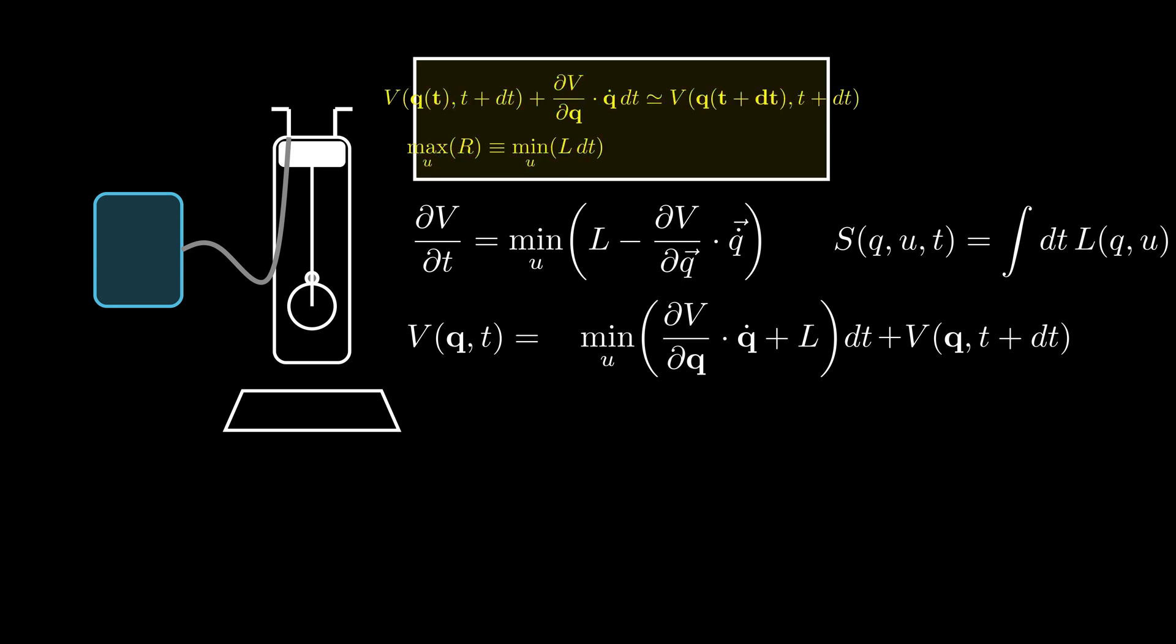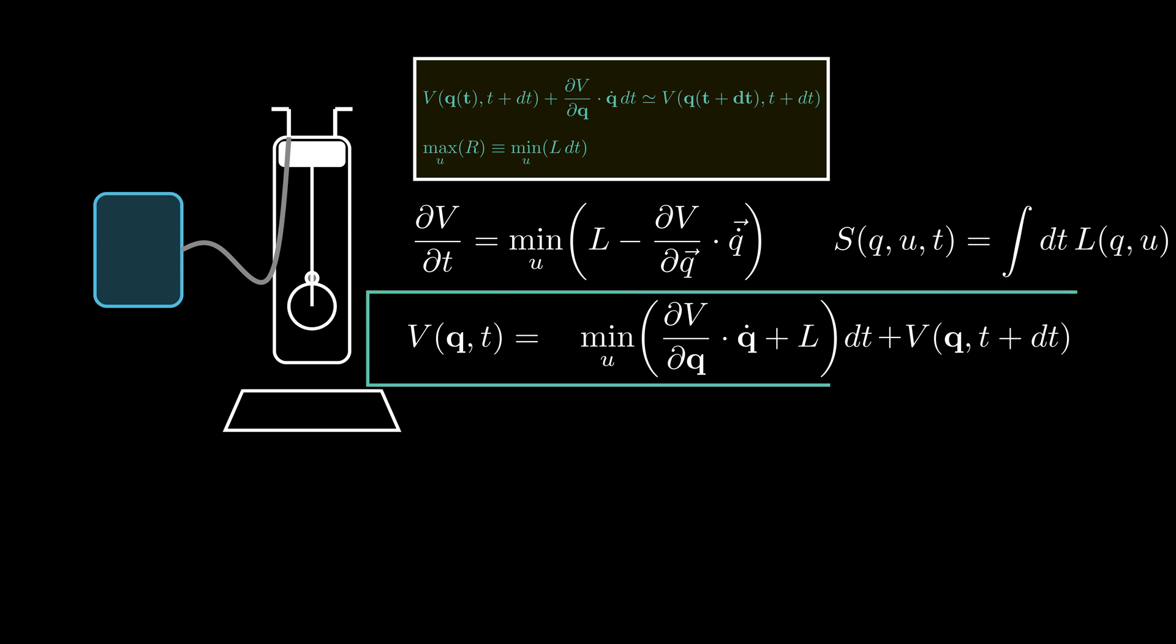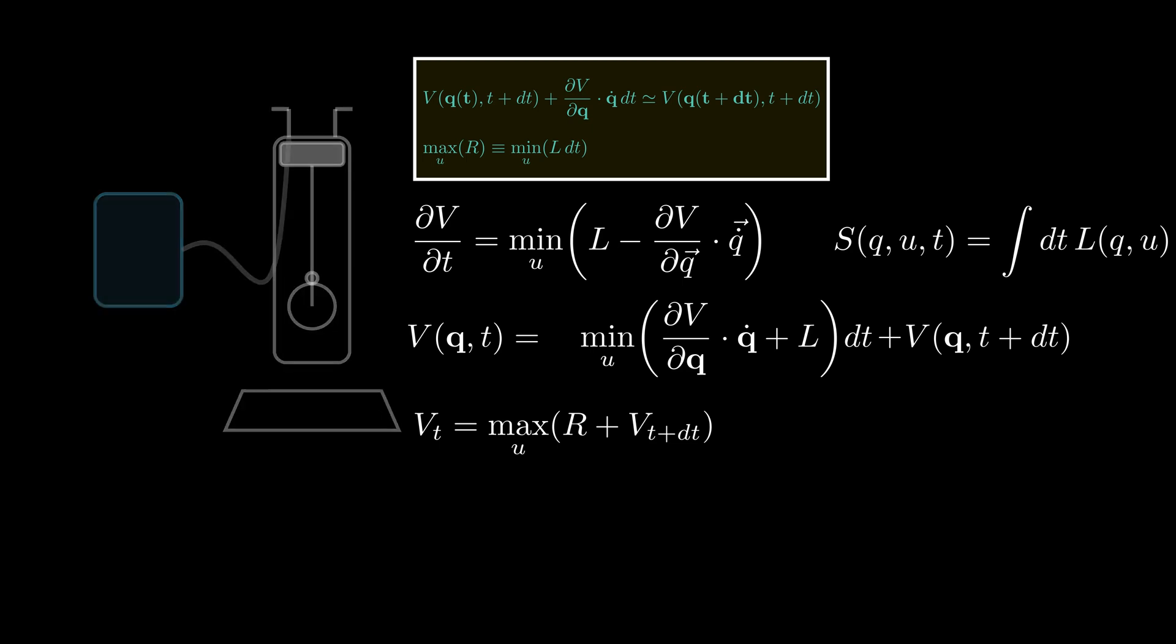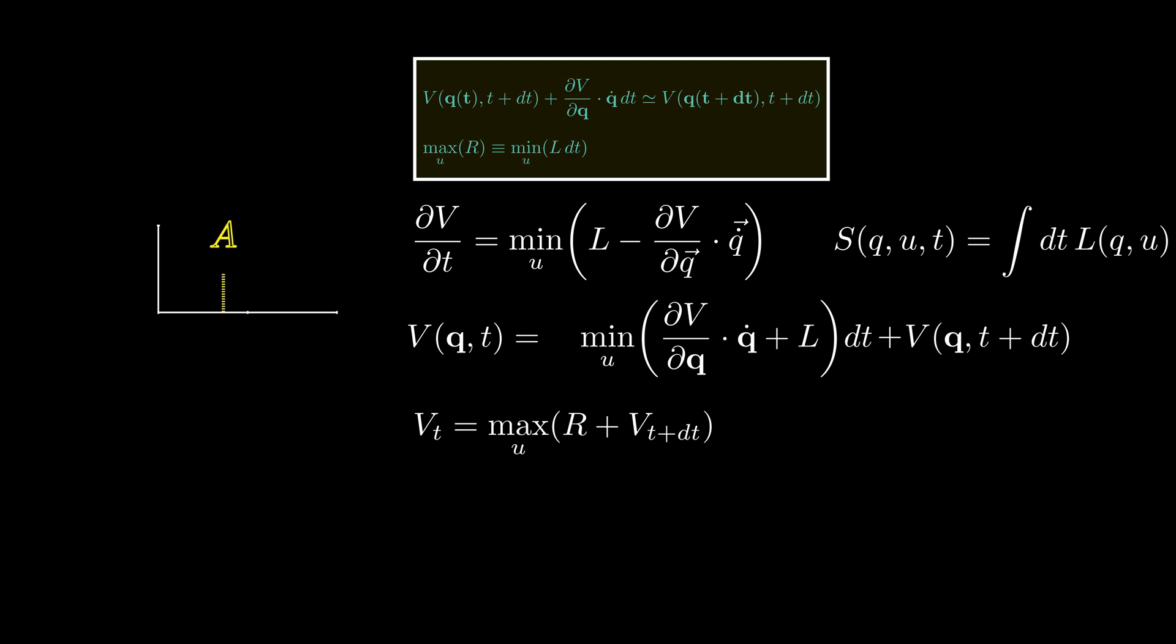Adding these two pieces back into the discretized version of the Hamilton-Jacobi-Bellman equation, we arrive at what is called the recursive Bellman equation. At this point, we are only one step away from reinforcement learning. This equation has a deterministic nature and makes the basis of the optimal control theory.